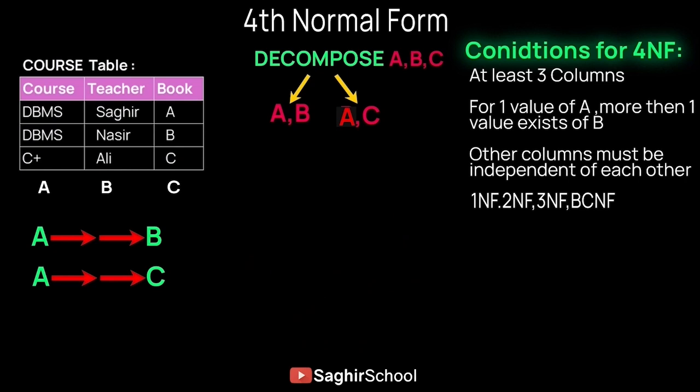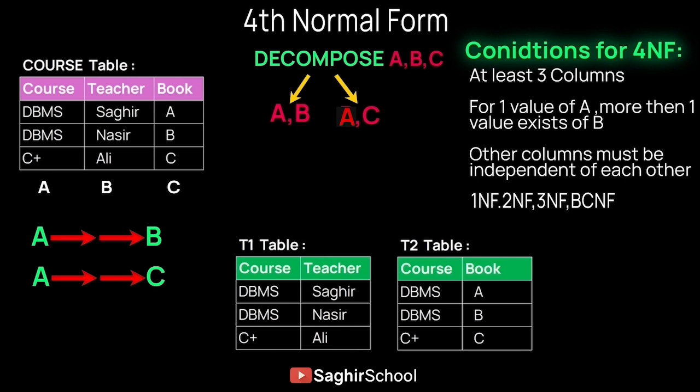A second example: in a Course table, Database Management System is taught by multiple teachers, and each teacher uses a different textbook. So Teacher and Book are both multi-valued. We decompose the table the same way — keeping the non-multi-valued attribute on the left and the multi-valued attributes in separate tables on the right — achieving Fourth Normal Form.